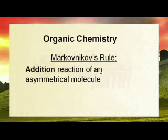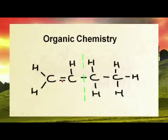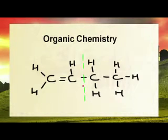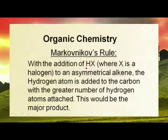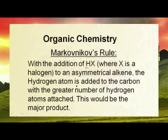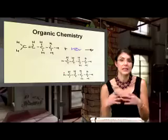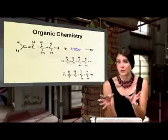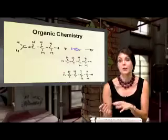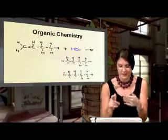Markovnikov's rule applies to addition reactions — specifically the addition of an asymmetrical molecule. An asymmetrical molecule is one where, if you cut it in half, the two sides do not look the same. The rule states: with the addition of HX (where H is hydrogen and X is a halogen from group seven) to an asymmetrical alkene, the hydrogen atom is added to the carbon with the greater number of hydrogen atoms already attached. This is the major product.